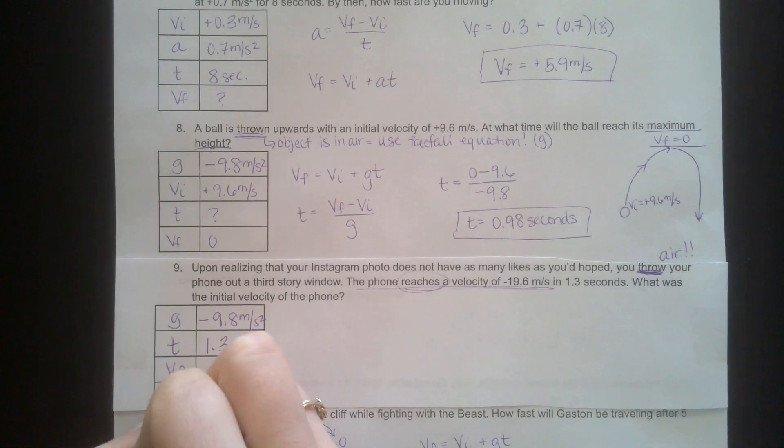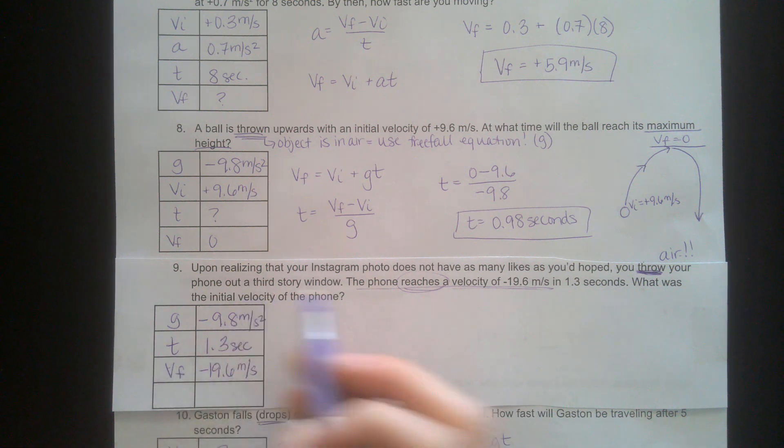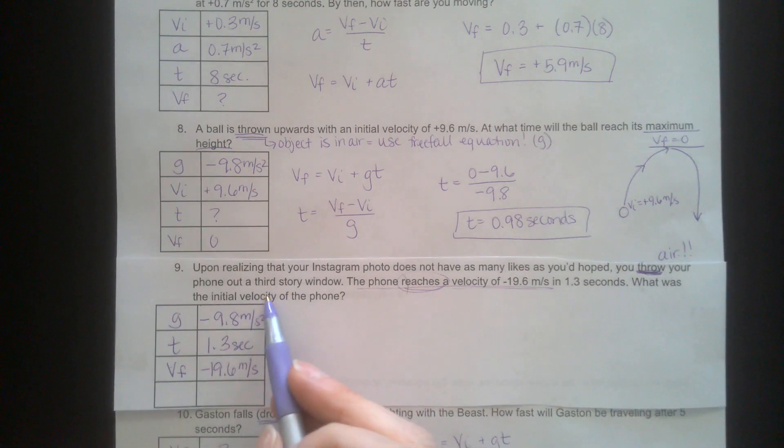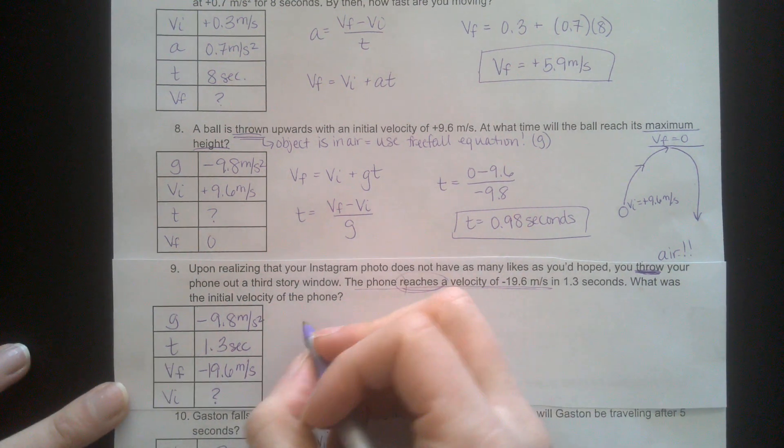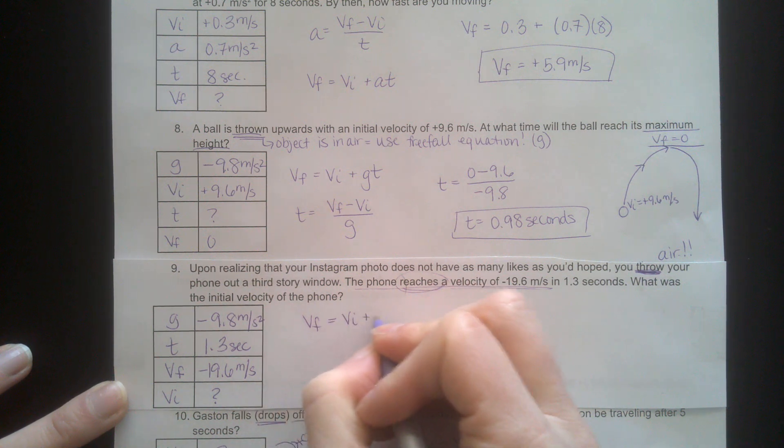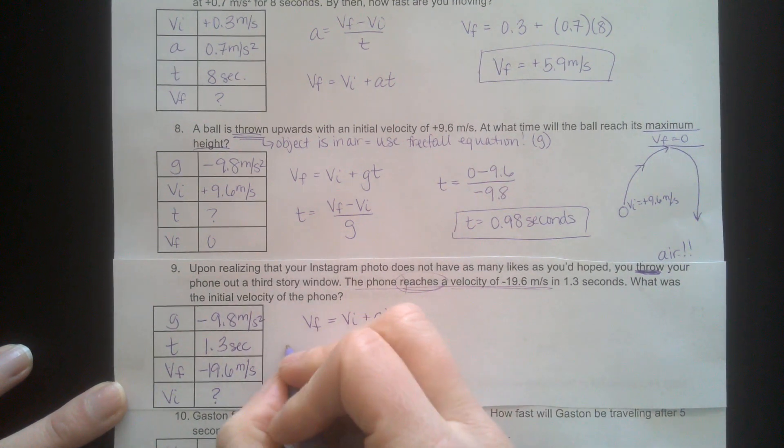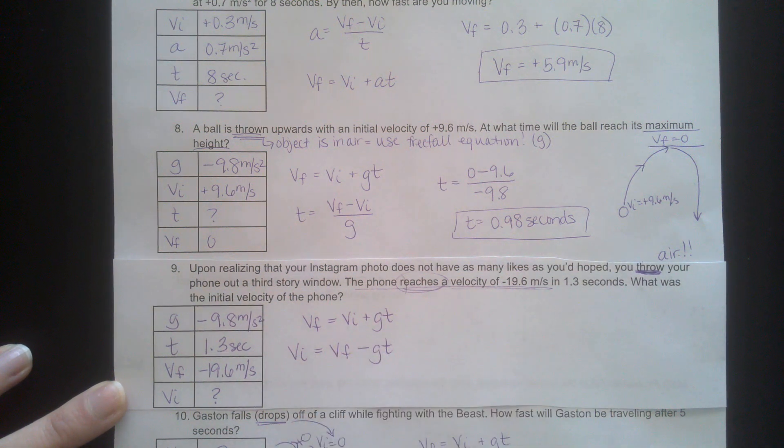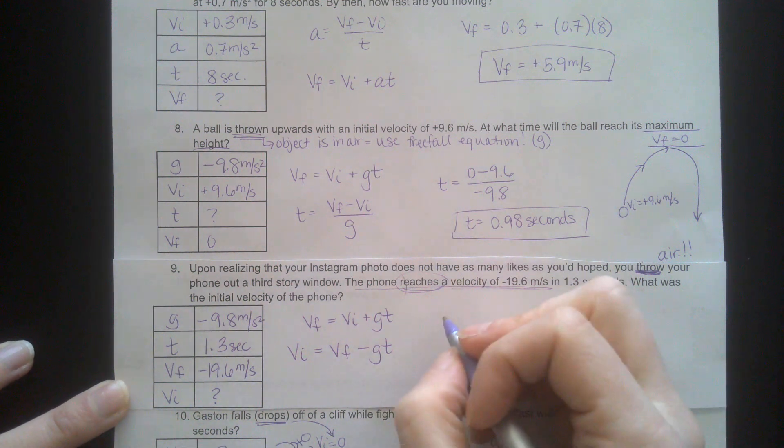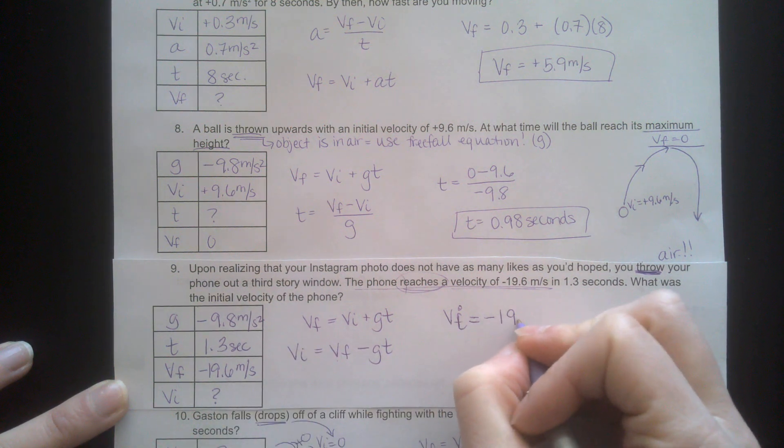I see a time there. Now is this VI or VF? Well after the 1.3 seconds it reaches a velocity, so that's going to be a VF. Another way I would know that's VF is because it asks for VI. What was the initial velocity of the phone? So that's my unknown. I'm going to use my free fall equation.